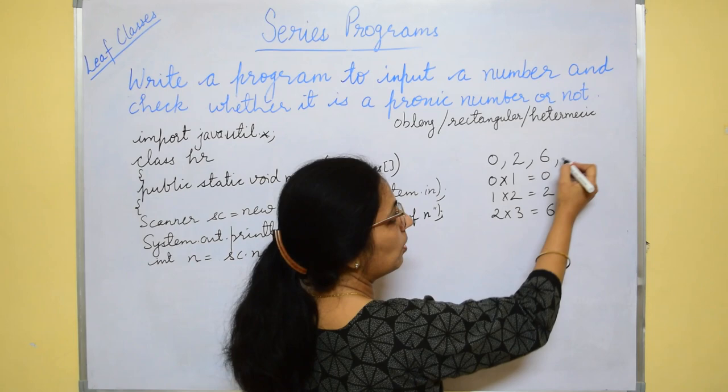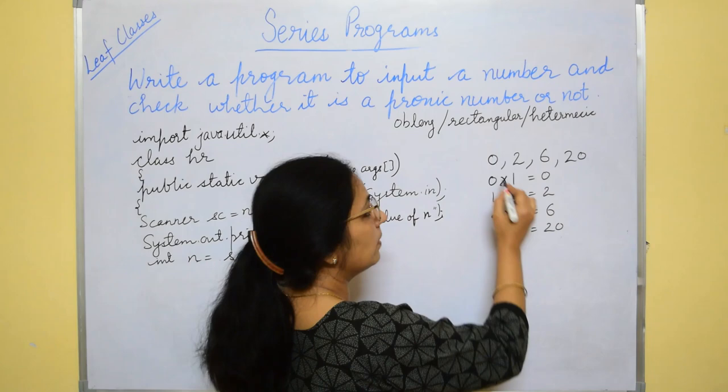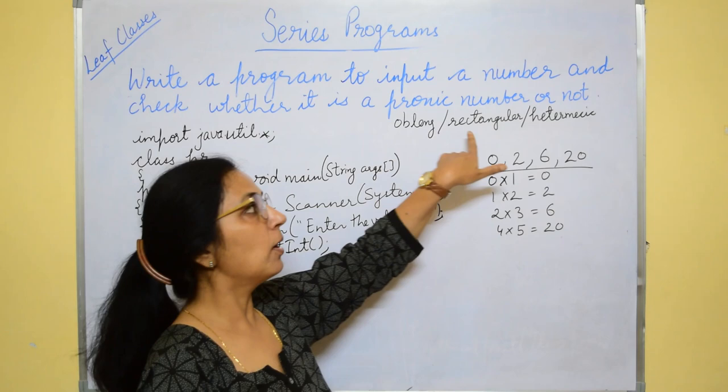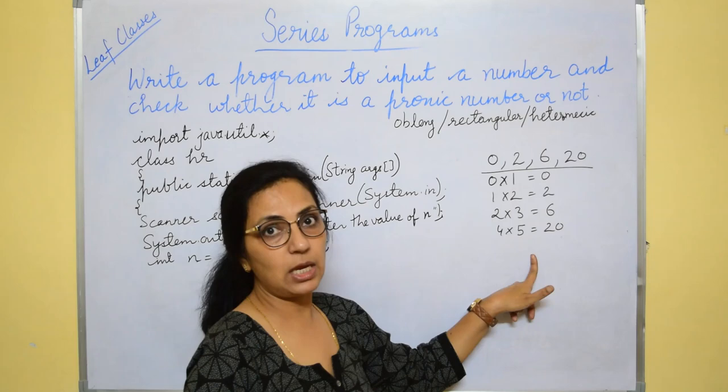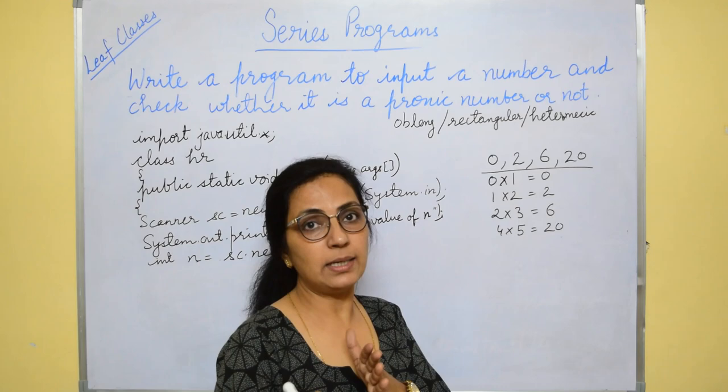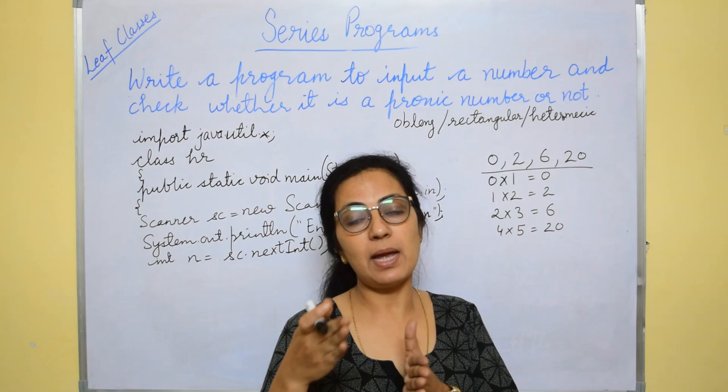4 into 5 is 20. So these are the pranic numbers. Pranic numbers are also known as oblong, rectangular or heteromacic numbers. So any term can be asked in the question. It is the product of two consecutive integers, i or i plus 1, 2 and 3.